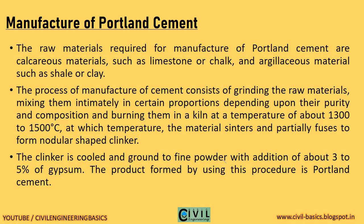The raw materials required for manufacture of Portland cement are calcareous materials such as limestone or chalk, and argillaceous material such as shale or clay. The process of manufacture consists of grinding the raw materials, mixing them intimately in certain proportions depending upon their purity and composition, and burning them in a kiln at a temperature of about 1300 to 1500 degrees Celsius, at which temperature the material sinters and partially fuses to form nodular shaped clinker. The clinker is cooled and ground to fine powder with addition of about 3 to 5% of gypsum. The product formed is Portland cement.